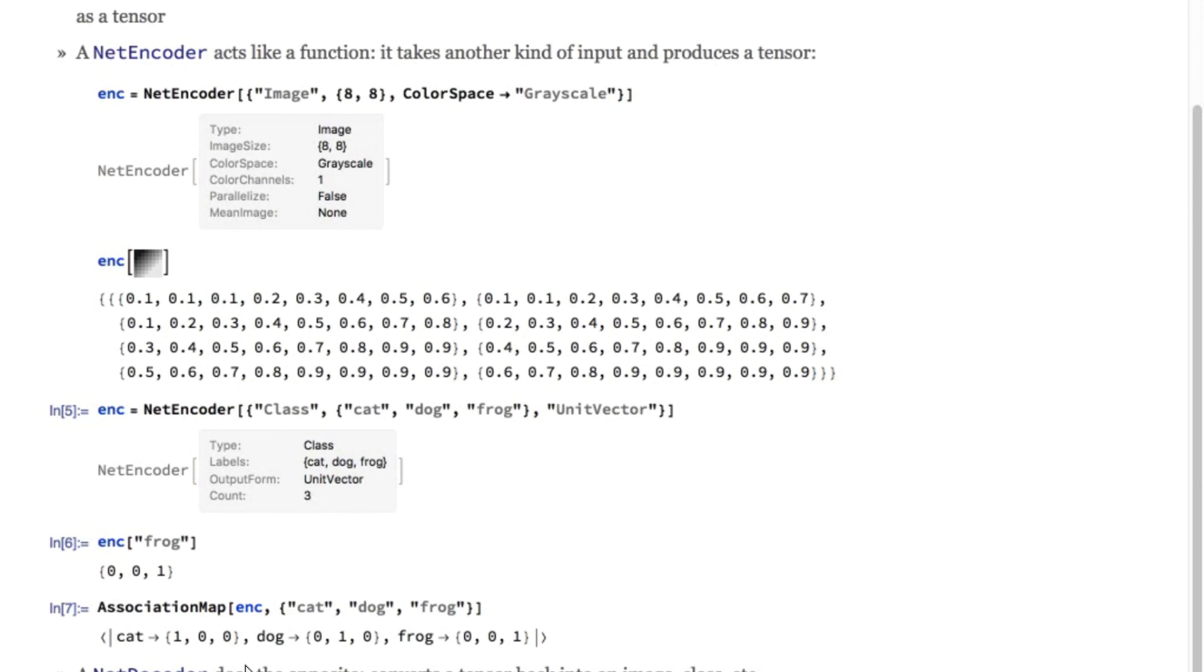The net decoder does the opposite. It's used on the output of a net, and it takes a tensor and converts it back into something like an image or a class.